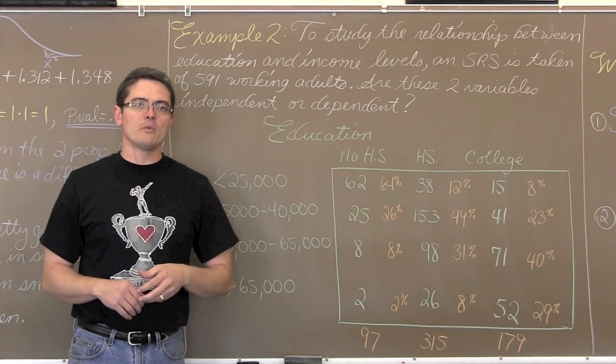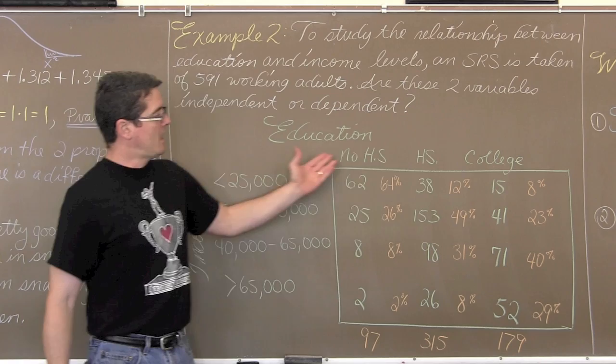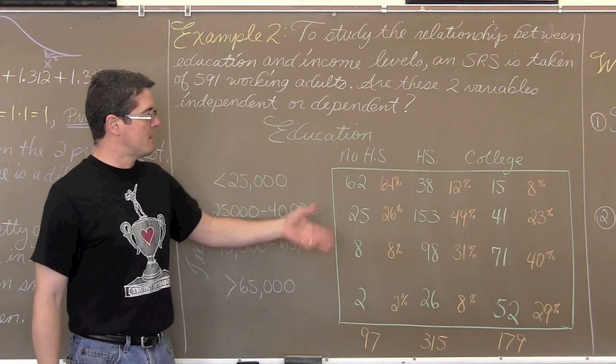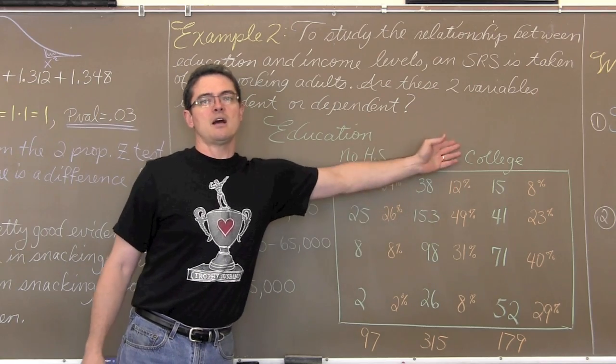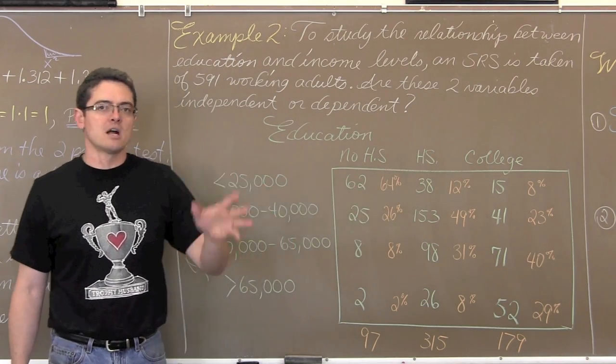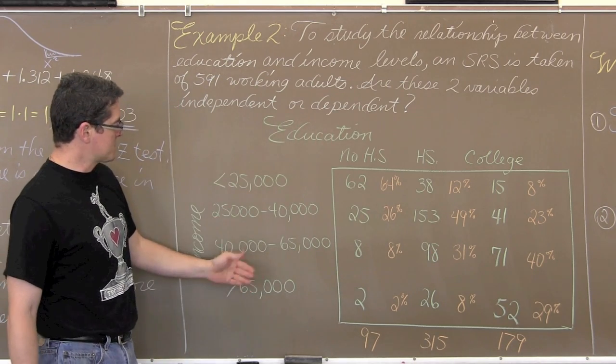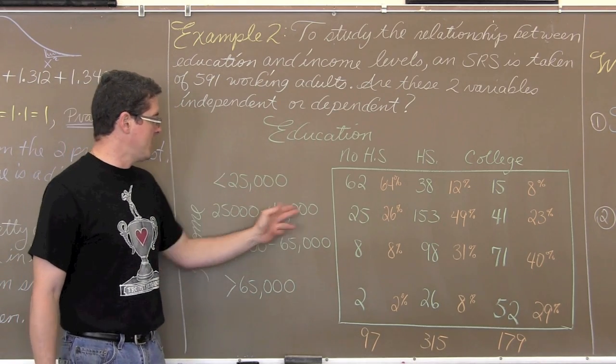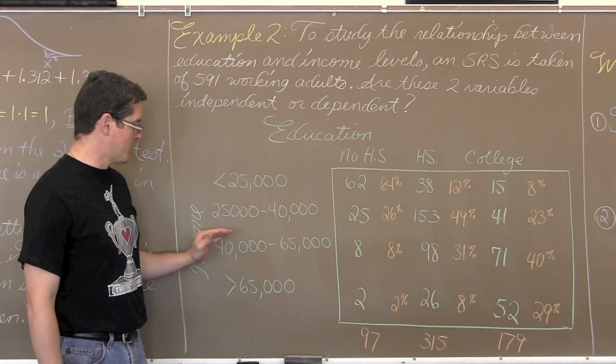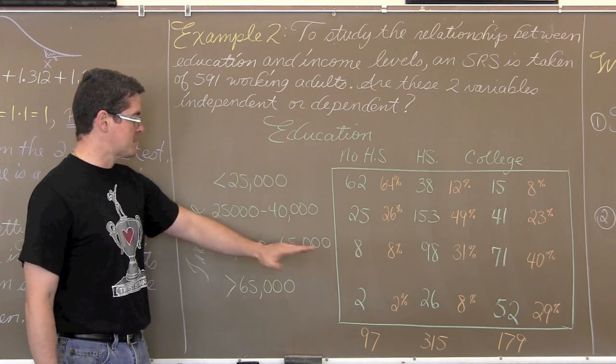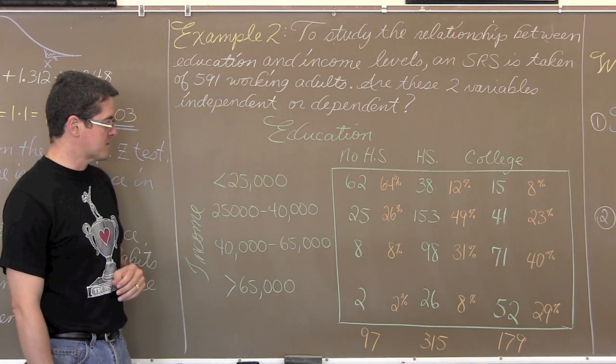Now I have used this example before when we talked about two-way tables many chapters ago. A fairly straightforward example, I have made up my own numbers and we have no high school education, high school education and then college. I am not talking about two year and four year degrees and masters and doctors, we will just simplify it and say college education. We have some categories of income, less than $25,000, between $25,000 and $40,000 and if you cross that $40,000 threshold we are into $40,000 and $65,000 and then finally those people that make over $65,000.